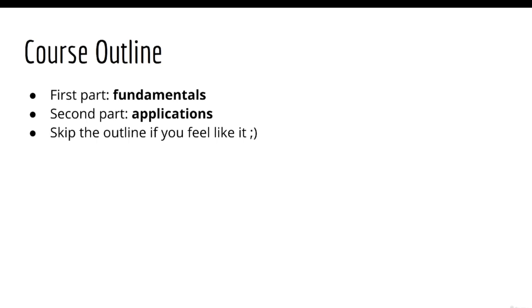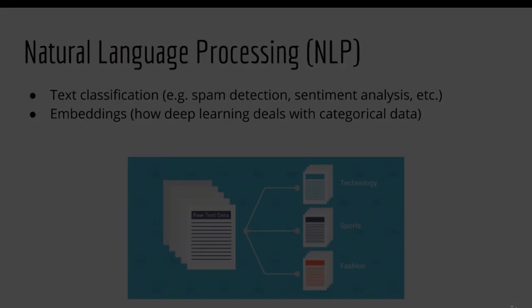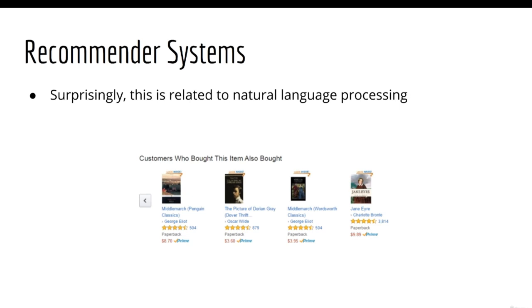The first major part of this course is about the fundamental architectures in deep learning, while the second major part is focused on applications. The first application we will look at is natural language processing, specifically with text documents. You'll see how we can use deep learning for text classification — the type of task you would use for spam detection, sentiment analysis, and so on. We'll also look at embeddings, which are deep learning's method of dealing with categorical data. Embeddings will lead us to our next application on recommender systems, and hopefully you will learn about the hidden connection between these two different fields.